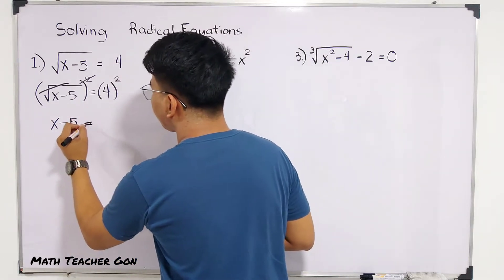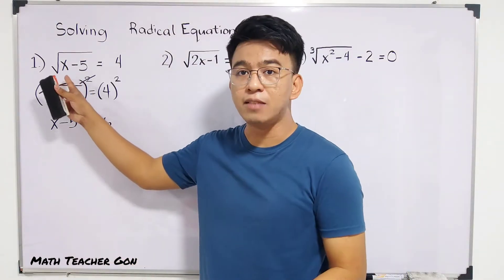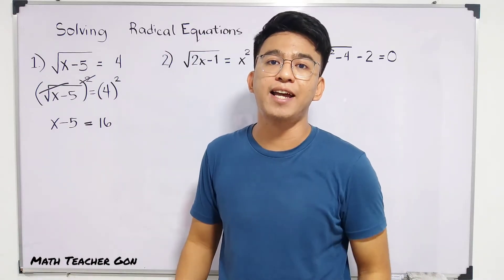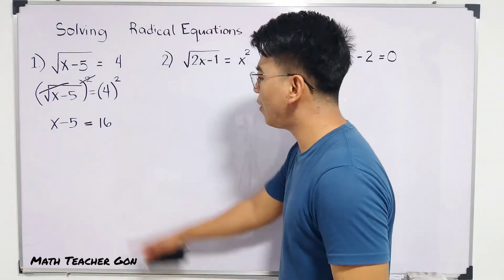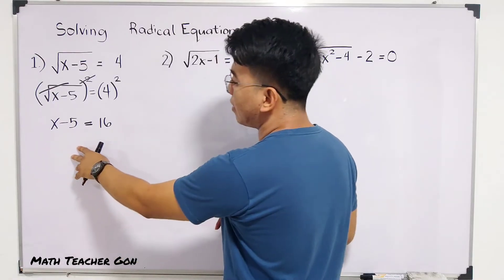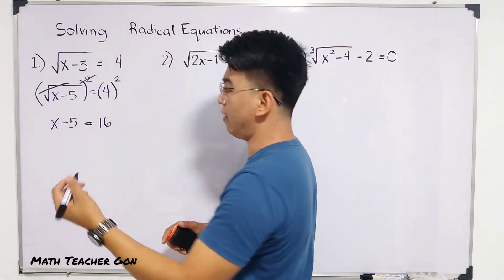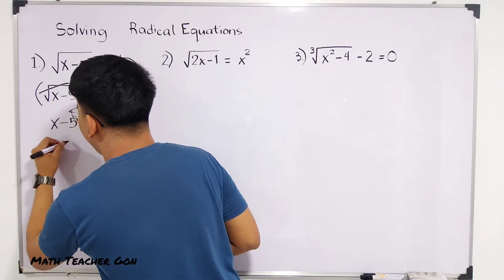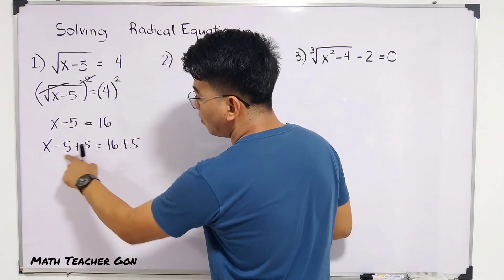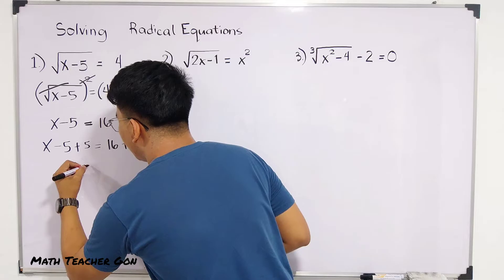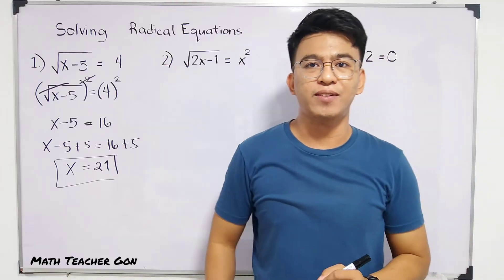For the other side of the equation, 4 squared is equal to 16. As you can see, from the square root of x minus 5, we have already eliminated the radical sign — that was the cause of why it looked hard to solve. So to solve for the value of x, we need to eliminate negative 5. To do that, we add both sides of the equation by 5: x minus 5 plus 5 is equal to 16 plus 5. The minus 5 and plus 5 become 0, giving us x is equal to 21. This 21 is the value of x for the given equation.